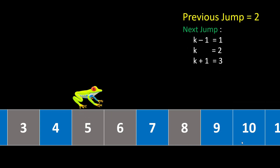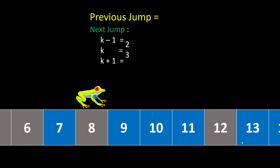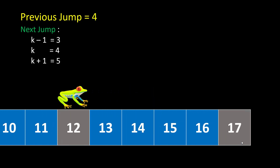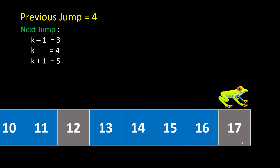When we reach index 5, we took 2 jumps, so the next jumps are 1, 2, or 3. We take 3 jumps and land on index 8. The previous jump becomes 3, so the next jumps are 2, 3, or 4. We take 4 jumps and land on index 12. Previous jump becomes 4, next jumps are 3, 4, or 5. Lastly we take 5 jumps and reach the last stone at index 17. We return true — we can reach the last stone by following the conditions given in the problem.